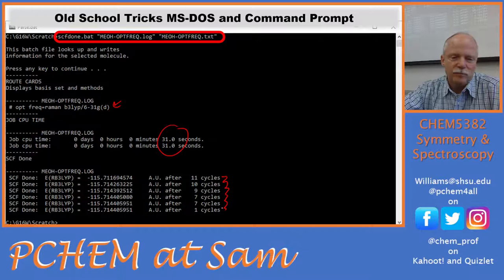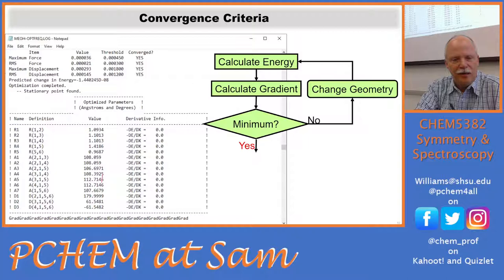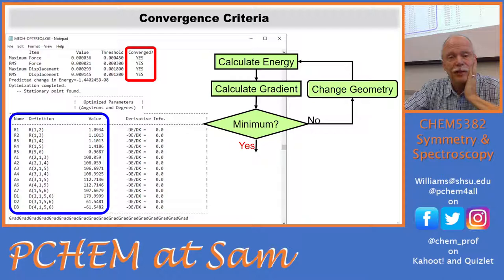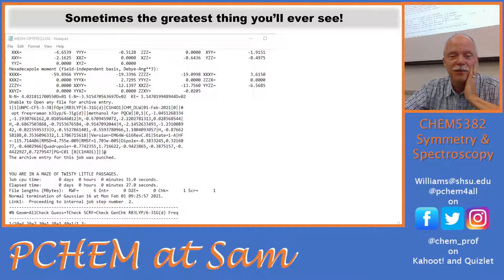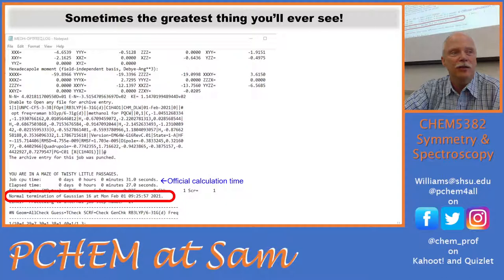After convergence, we get down well below our thresholds — all four convergence criteria are 'yes' — and we're at a minimum. Here's the optimized geometry output. Notice the bond lengths have changed slightly from the initial guess, and the hydrogens are no longer perfectly symmetric. This is where you'd find specific optimized bond lengths. The greatest thing you'll ever see after two or three days of calculation: 'Normal termination of Gaussian 16.' That tells you the log file contains a calculation that ended without error.